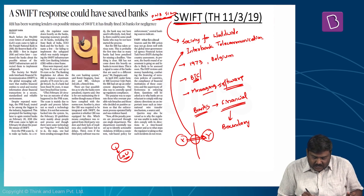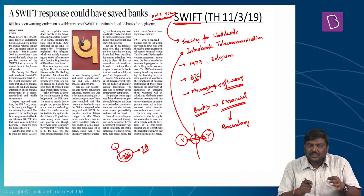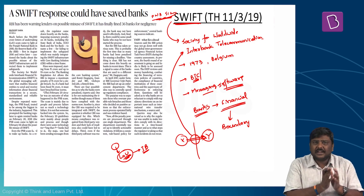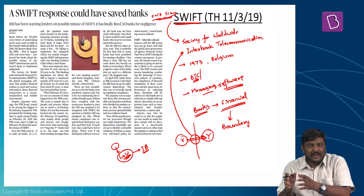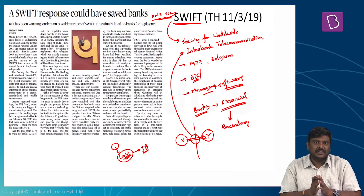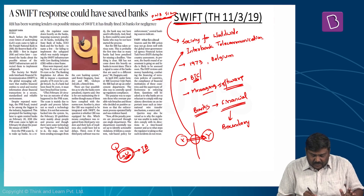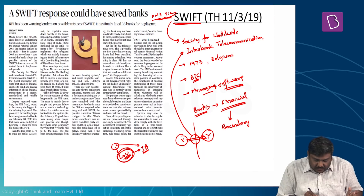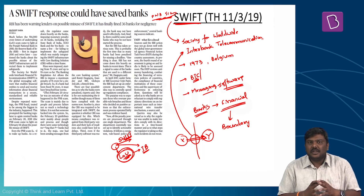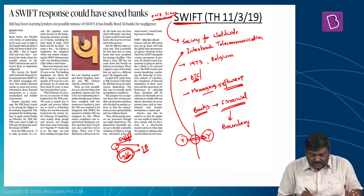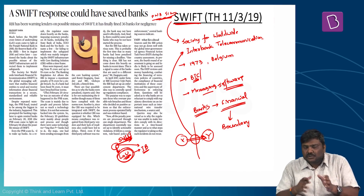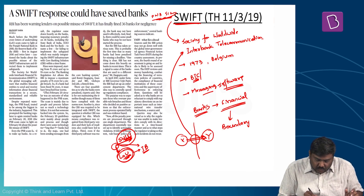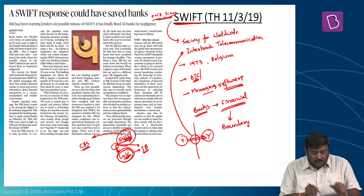LOUs are used to borrow from international banks. In simple terms, LOUs are issued by one bank in a domestic country and can be used to borrow money from a bank branch situated outside that country. Whenever such instruments are issued, the information is transmitted through the SWIFT software. In the PNB scam, the LOUs were issued and messages were transmitted through the SWIFT system, but SWIFT was not integrated with CBS — core banking solutions.